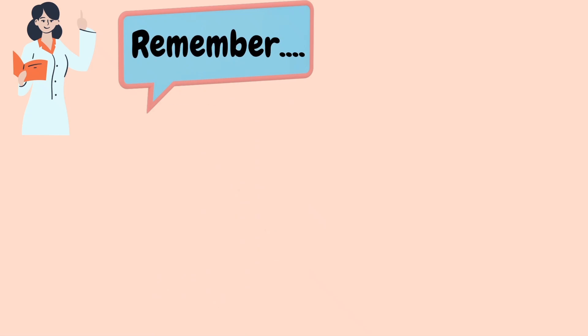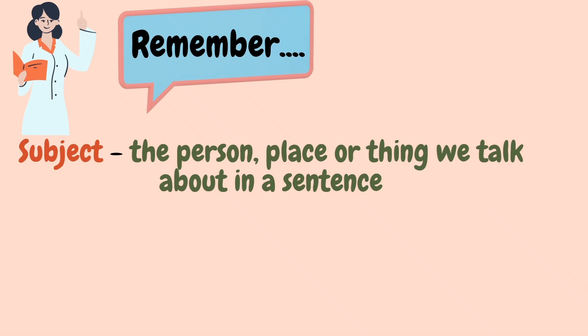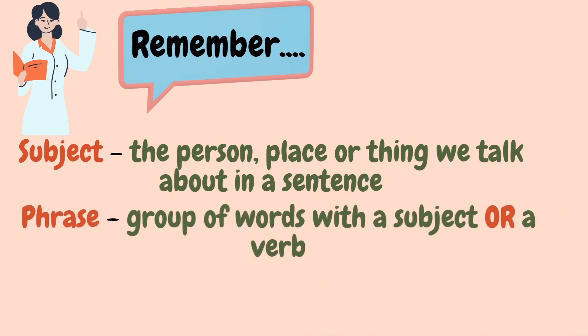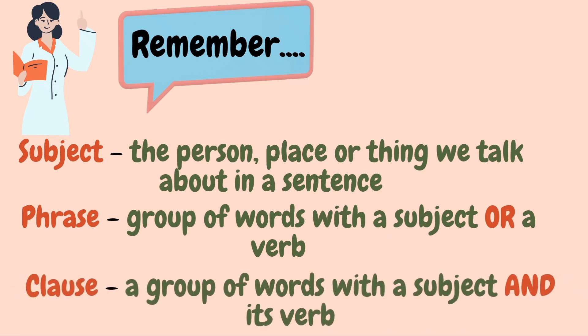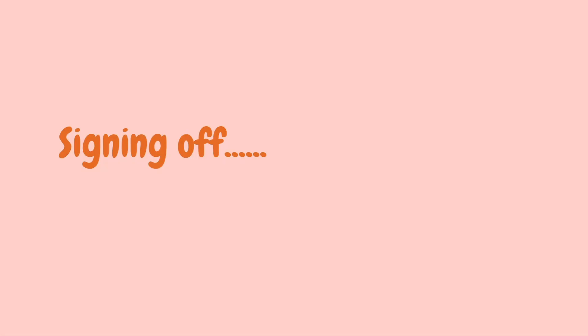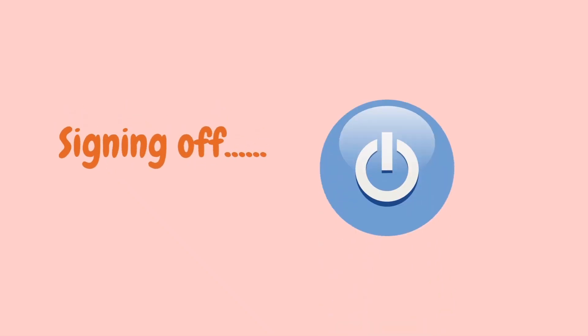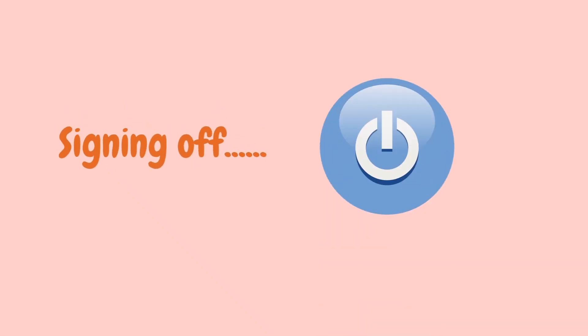Okay, so now it's time to review. Remember: a subject is the person, place, or thing we talk about in a sentence. A phrase is a group of words with a subject or a verb. A clause is a group of words with the subject and its verb. Signing off for now — see you soon!